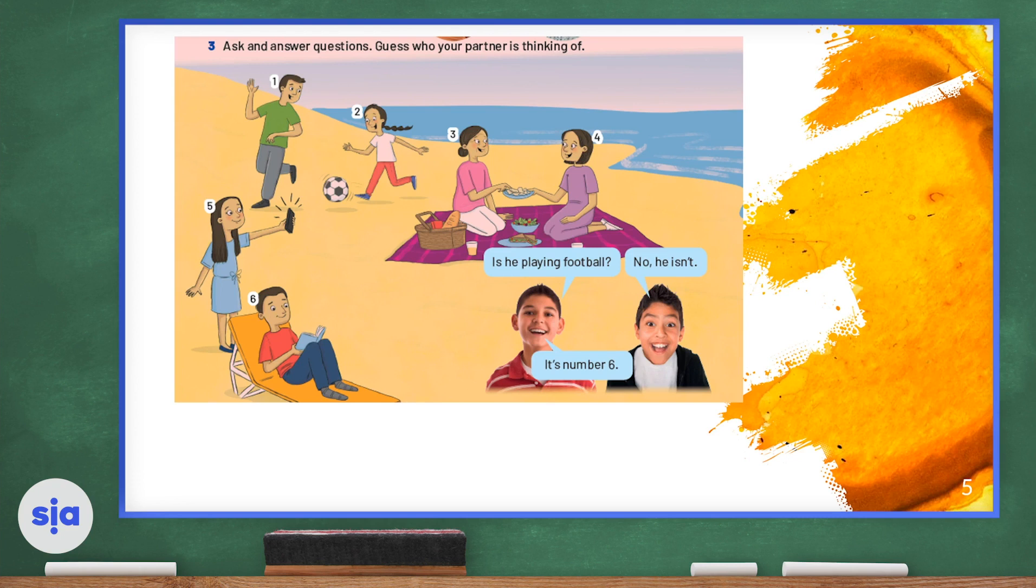Now I want you to ask and answer questions and guess who your partner is thinking of. So look at the pictures together. Let's look at number one, picture two, pictures three and four, five and six, and guess who your partner is thinking of. Let's take an example: if we look at picture five, we will see a girl holding the phone. She's looking at her phone and she's smiling, so maybe she wants to take a selfie.